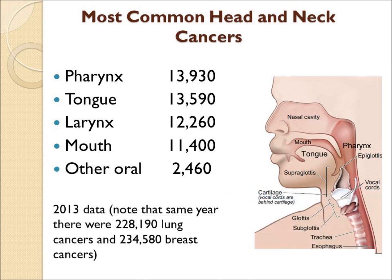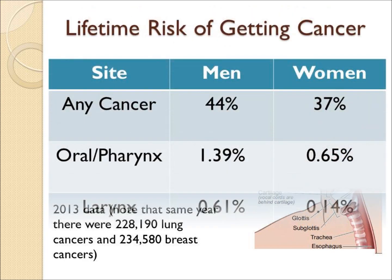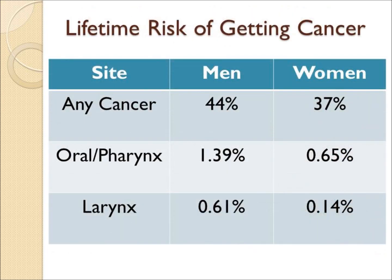The most common sites are shown here: throat, tongue, larynx, and mouth. Note that these cancers are much less common than lung cancer or breast cancer in a given year, and the odds of developing one of these cancers is quite small, particularly in women where the odds are less than 1% as noted.